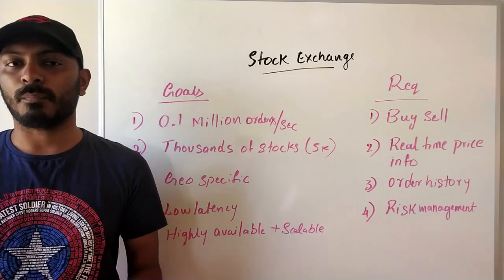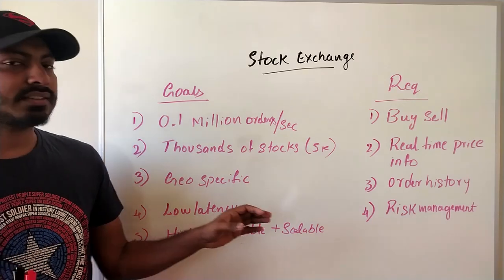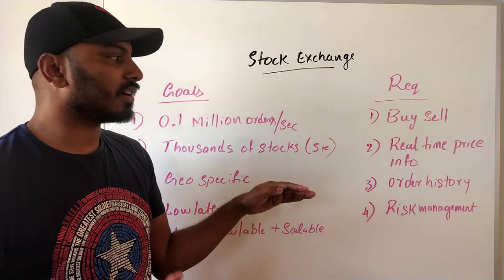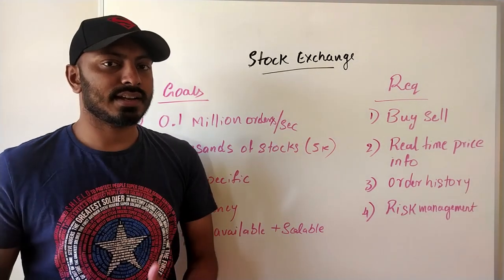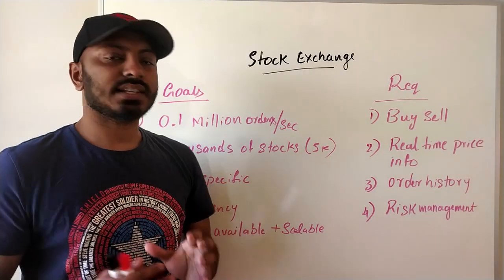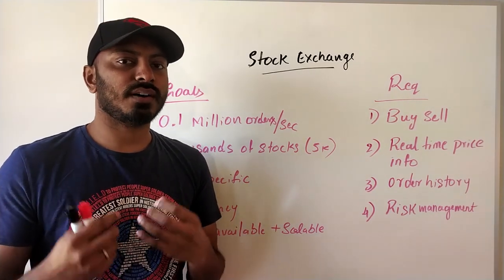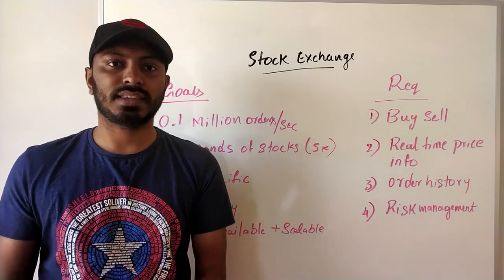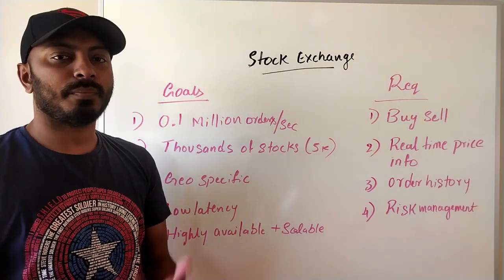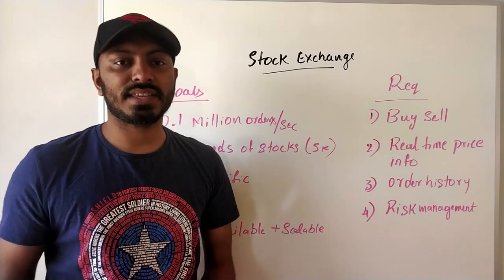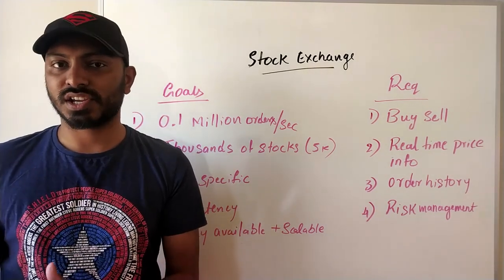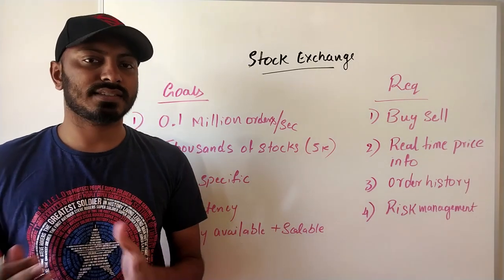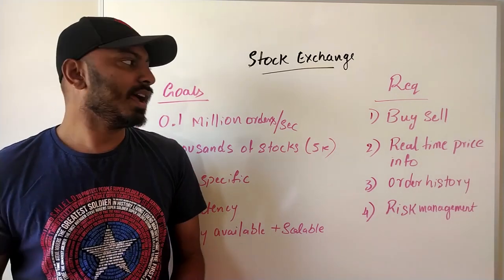We can use this system wherever we have to match supply to demand or vice versa. The requirements for our system are: users should be able to buy and sell stocks on this platform; real-time price update information so users can see price fluctuations before placing an order; basic functionality like viewing all owned stocks and order history; and risk management to analyze risk before executing order matching.